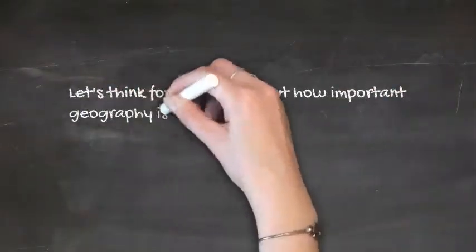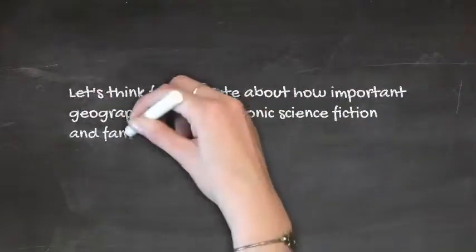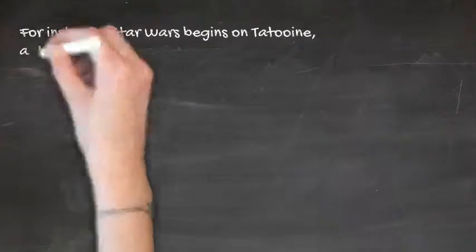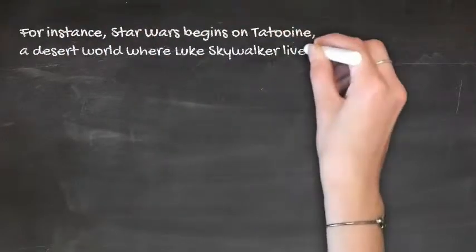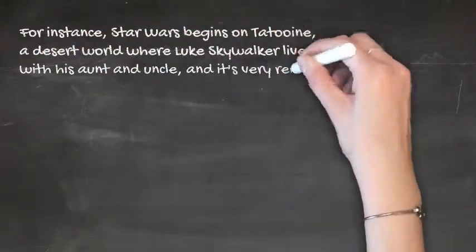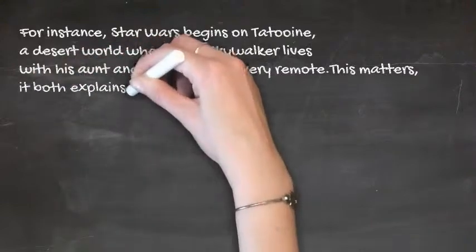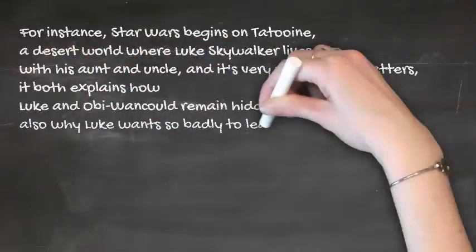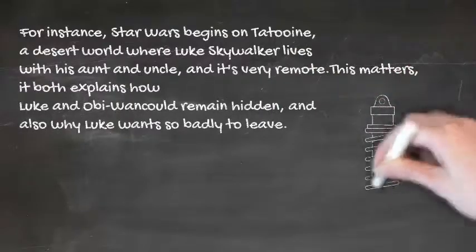Let's think for a minute about how important geography is in a few iconic science fiction and fantasy stories. For instance, Star Wars begins on Tatooine, a desert world where Luke Skywalker lives with his aunt and uncle, and it's very remote. This matters. It both explains how Luke and Obi-Wan could remain hidden, and also why Luke wants so badly to leave.